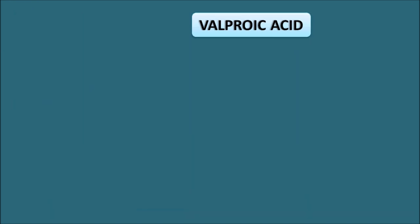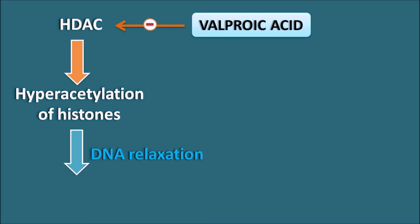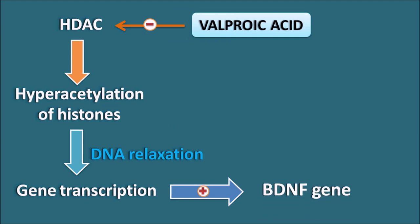Valproic acid inhibits HDAC, histone deacetylase enzyme, which is responsible for deacetylation of amino acids on histones. When this enzyme is inhibited, it results in hyperacetylation of histones, particularly at lysine residues. Hyperacetylated histones produce DNA relaxation, promoting gene transcription. One important gene produced is the BDNF gene, increasing BDNF release, which again leads to neurogenesis.